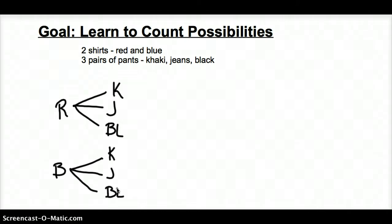And if I chose blue, I have those same three options, okay? Now this is called a tree diagram. Now I have my khakis, my jeans, and my black pants. So if you think about this, I have red with khakis, red with a pair of jeans, and red with black pants. Those are my three choices there. And then I have blue shirt khaki, blue shirt with jeans, and blue shirt with black pants.